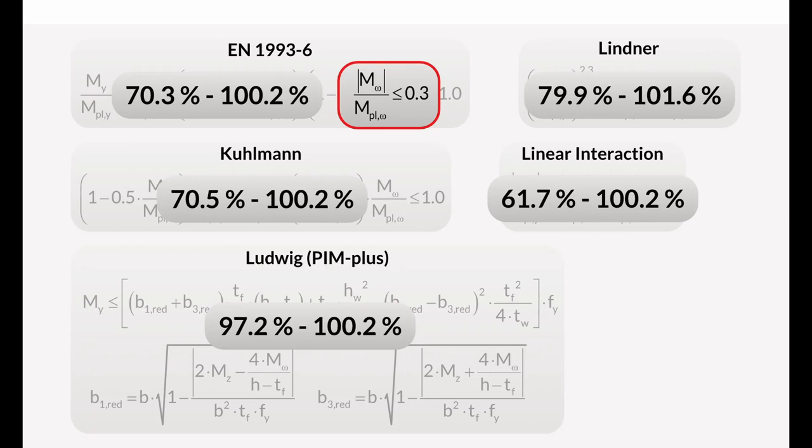Using the interaction condition according to Eurocode 3 part 6, the ratio of the warping moment has to be limited to 0.3. Otherwise, it occurs non-conservative results. PIM plus leads to the best results, but the interaction condition is very complex.